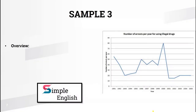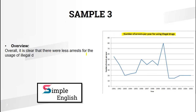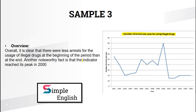Here's our third sample — a single line graph showing the number of arrests per year for using illegal drugs. The first sentence: 'Overall, it is clear that there were fewer arrests for the usage of illegal drugs at the beginning of the period than at the end.' You could simply say the figure faced a downward trend, but that's too simple a structure.